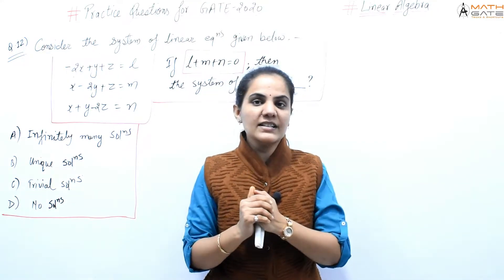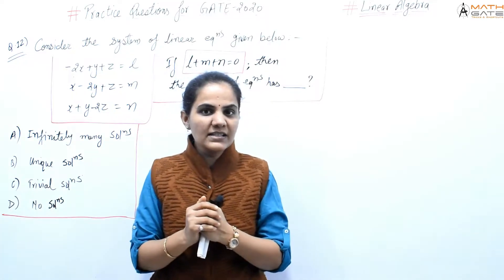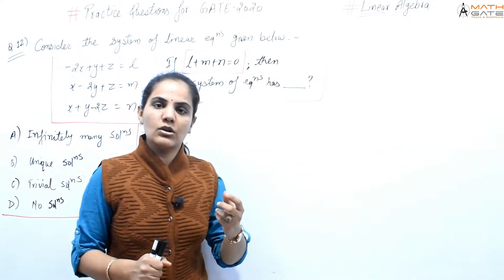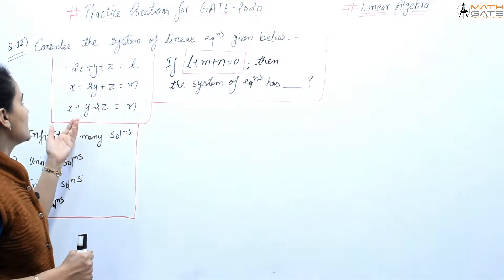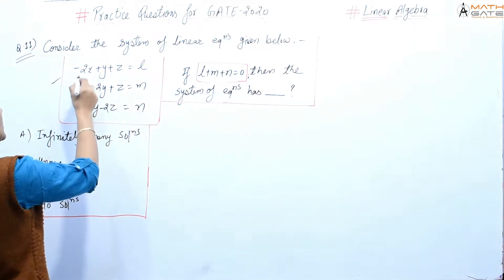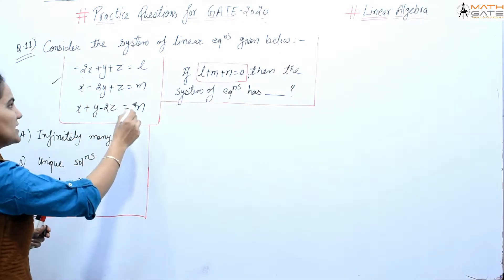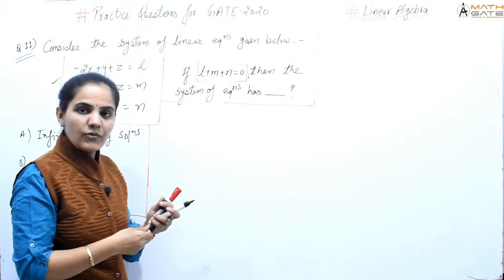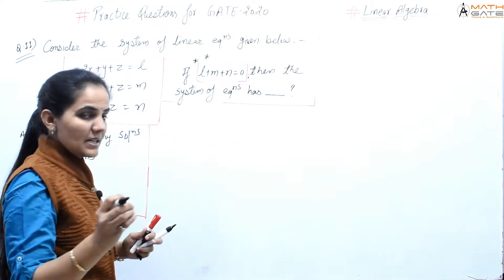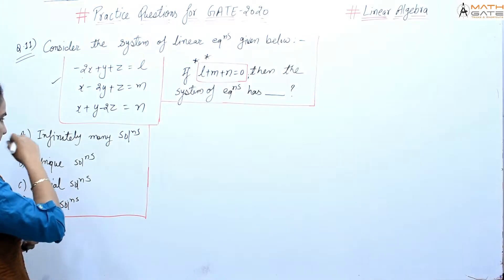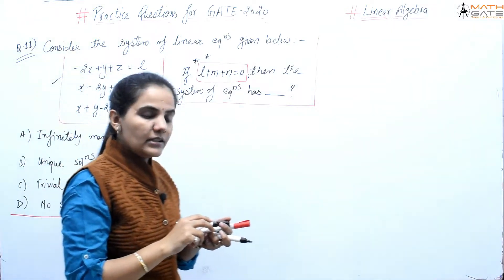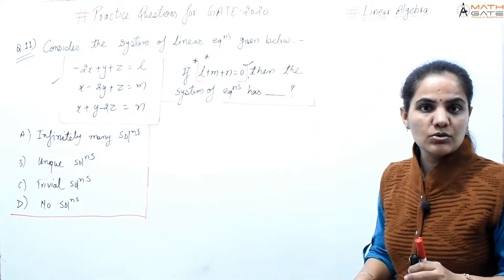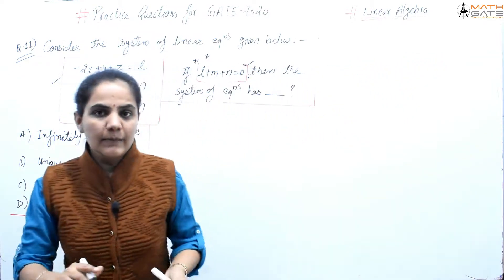Hello students, welcome to Math Gate. Let's discuss practice question number 12 of your upcoming GATE 2020 examination. This question is from linear algebra — specifically from system of linear equations. The question is: consider the system of linear equations: minus 2x plus y plus z equals l, x minus 2y plus z equals m, and x plus y minus 2z equals n. If l plus m plus n equals 0, then the system of equations has — infinitely many solutions, unique solution, trivial solution, or no solution?